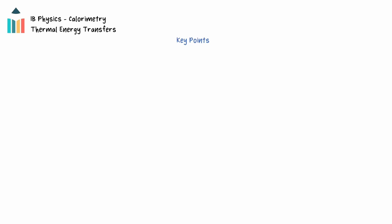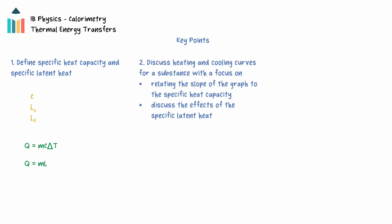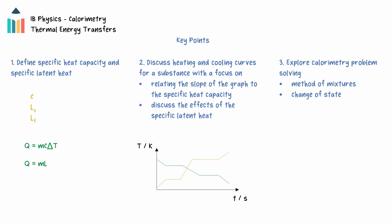In this video we will explore calorimetry and work through some sample problems. First, the definitions of specific heat capacity and specific latent heat will be introduced and the formulas for the thermal energy transfer discussed. Then the heating curves will be interpreted with a focus on these concepts. Finally, calorimetry will be explored with sample problems to demonstrate the key points.